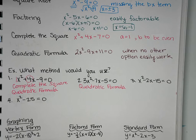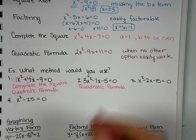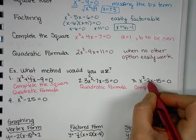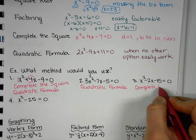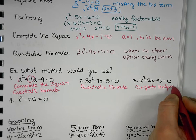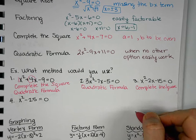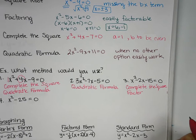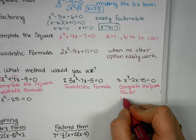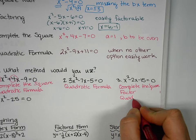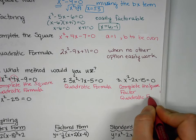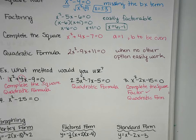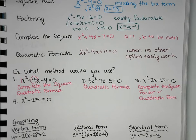Okay, what about number three? Okay, we could do complete the square because we have the one in front and an even. What else could we do? Okay, this one does factor, so we could factor. What else could we do? The quadratic formula. Which one would be the easiest to do, though? The factoring. So if you can see that it's factorable, try to do the factoring.